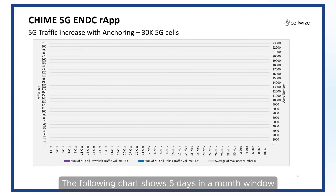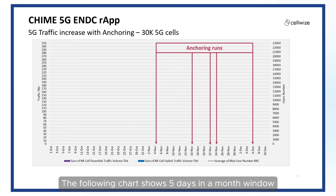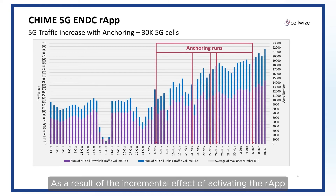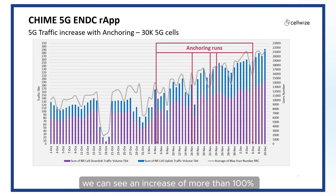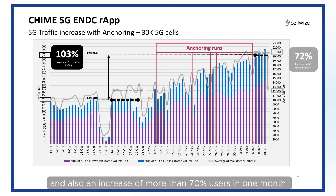The following chart shows a 5-day window in a month during which the R-App was activated. As a result of the incremental effect of activating the R-App, we can see an increase of more than 100% in general uplink and downlink traffic in the cells, and also an increase of more than 70% in users in one month.